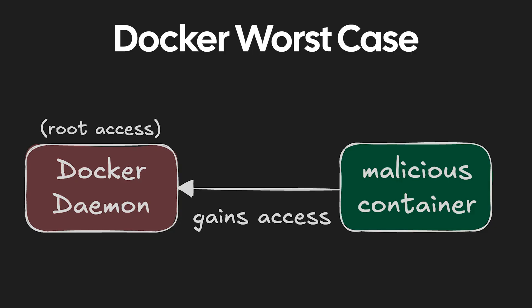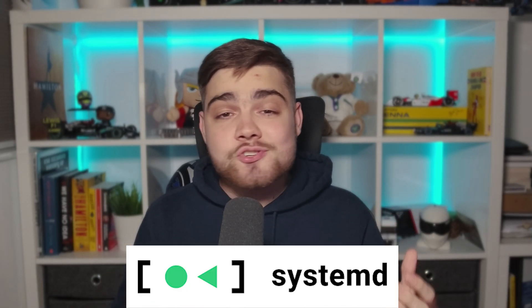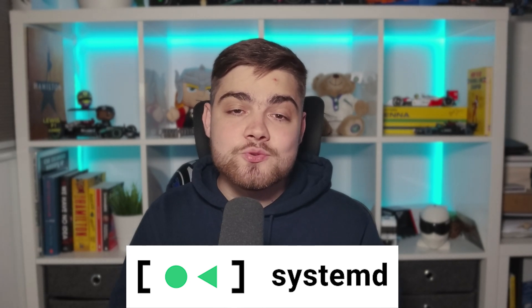In comparison, Podman is daemonless and rootless. It uses a fork-execute model, meaning that when you start a container with Podman, the Podman process forks itself and the child process becomes the container. This means there is no persistent background process managing the containers. Podman also interacts directly with container runtimes to execute those containers, eliminating the need for a daemon. For lifecycle management, like starting up your containers with the server, Podman integrates with SystemD, which offers a familiar way to control them.